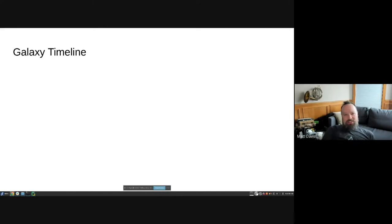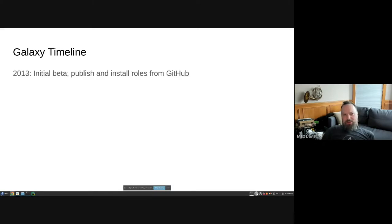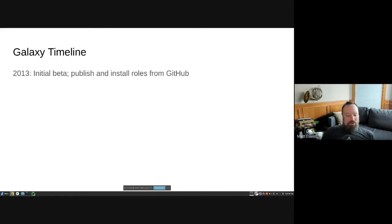For a bit of history: in 2013, Galaxy went into its initial beta, allowing people to publish and install Ansible roles from GitHub. It was a light metadata indexing site, with a CLI that let you publish things pointing to a GitHub repo — so the Galaxy site was really just metadata.